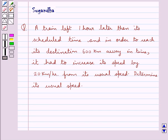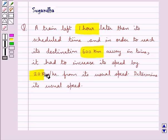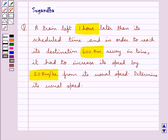Hello and welcome to the session. In this session we discuss the following question: a train left one hour later than its scheduled time, and in order to reach its destination 600 km away in time, it had to increase its speed by 20 km per hour from its usual speed. Determine its usual speed.